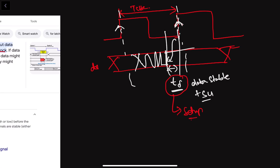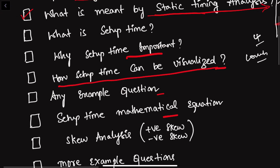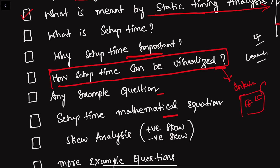But an important question arises: in a circuit, how do you determine that this T_delta is the setup time? In other words, how can setup time be visualized? You might say two nanoseconds is the setup time, but how does this time come into the picture? To understand this, you need to dive deep into the internal structure of the flip-flop — which involves transmission gates — and go inside the flip-flop to see how setup time arises.